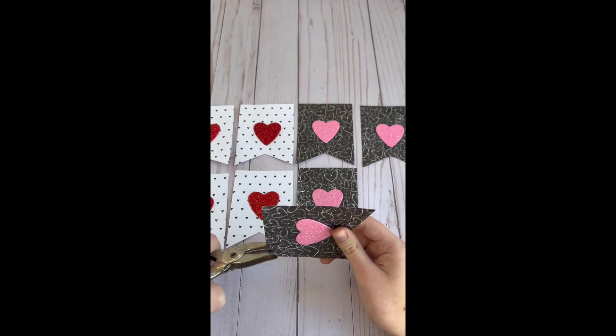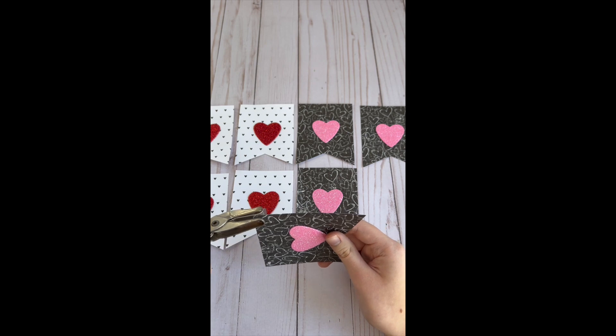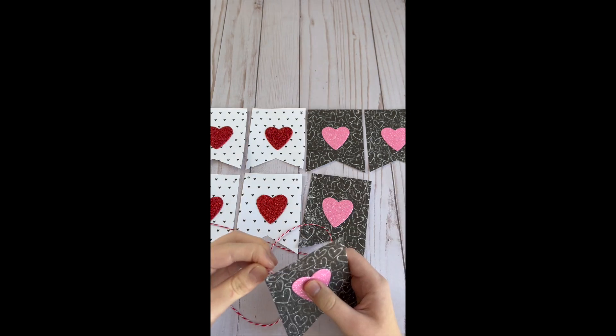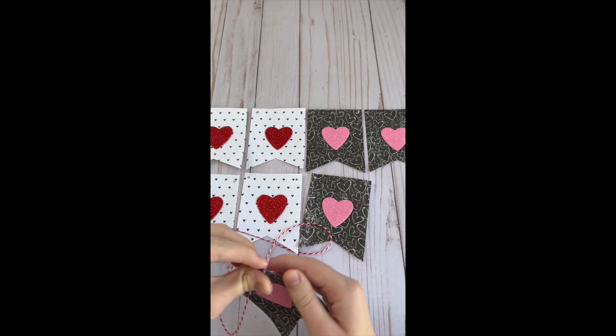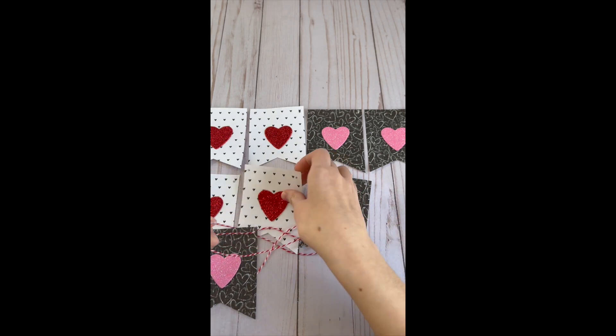Then I used a hole punch to punch a hole in each corner on the top of each piece and then strung the banner pieces on a piece of red and white twine.